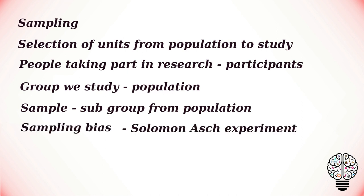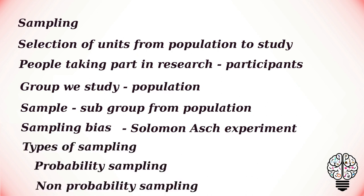One of the problems that can occur when selecting a sample from a target population is sampling bias. Sampling bias refers to situations where the sample does not reflect the characteristics of a target population. Many psychology students have a biased sample because they have used an opportunity sample that comprises university students as their participants — for example, the sampling done by Solomon Asch. There are two types of sampling methods.